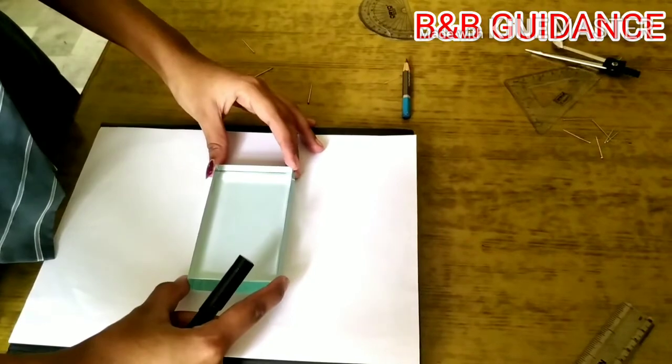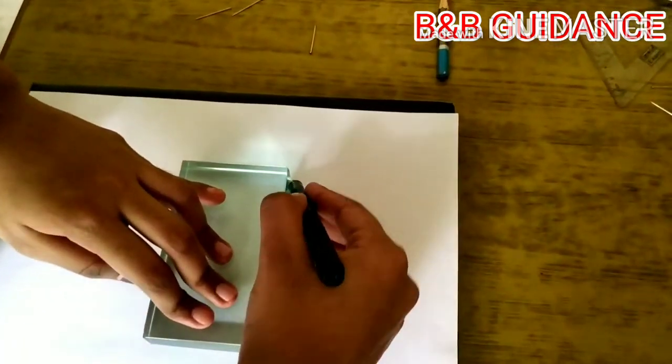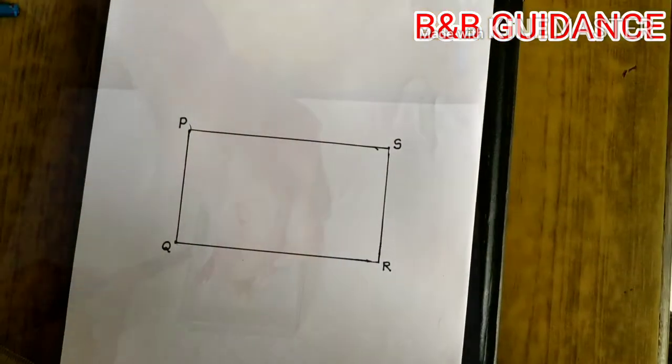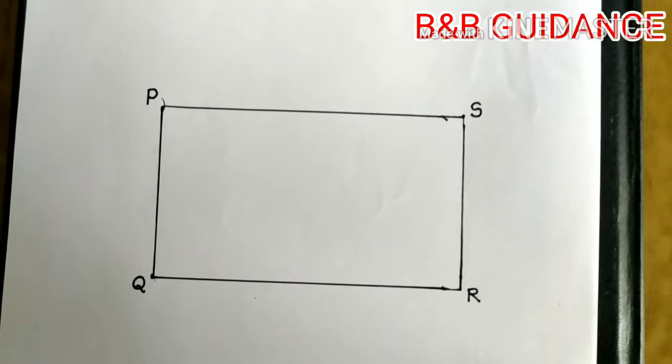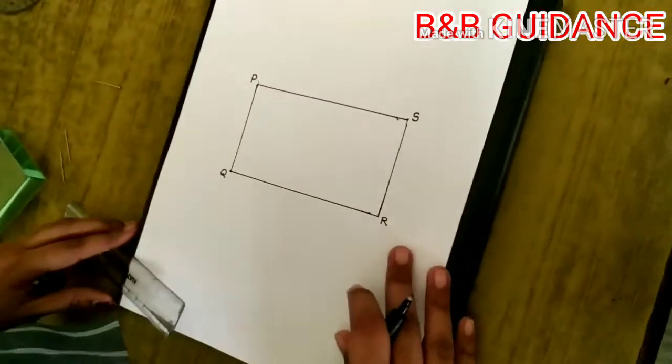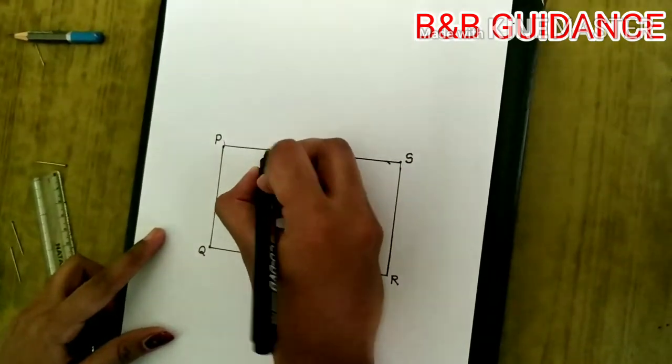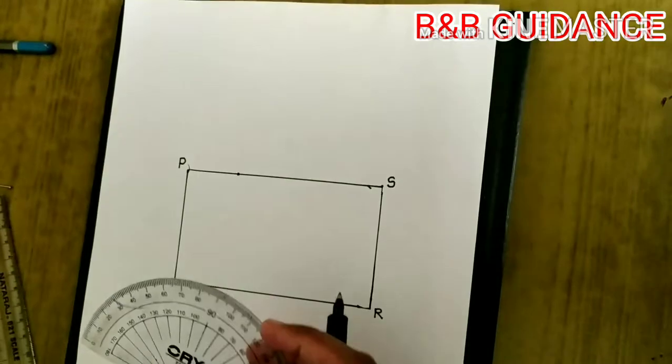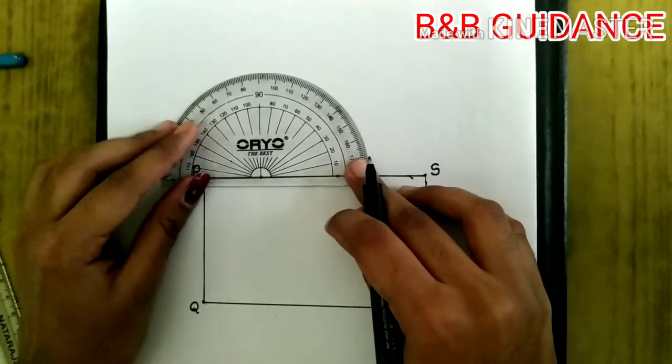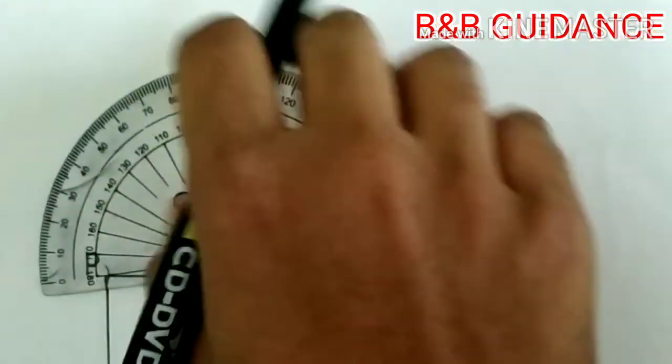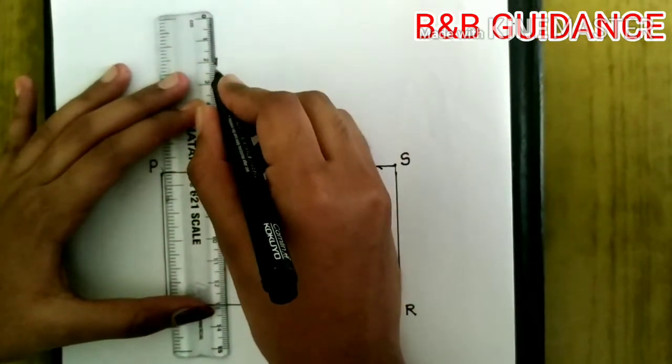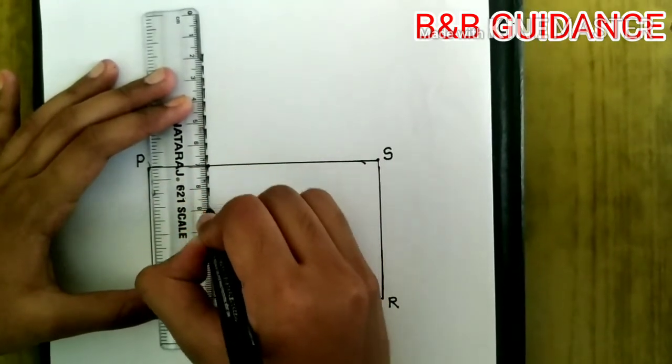So first we need to place the glass slab on the paper and take the outline of the glass slab and mark it as PQRS. Here PS and QR are representing the refracting surfaces. Then we should mark a point on PS and draw a perpendicular to the surface at the point marked. The dotted line here is a normal at the point of incidence.